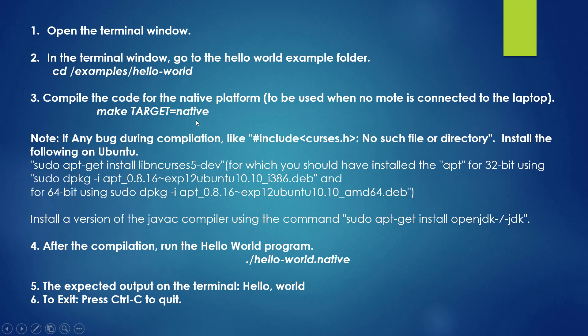Sometimes you may get an error — 99% of the time you will not get it if Contiki Cooja is properly configured. But sometimes, if some library files are missing, you may get the error: 'curses.h: No such file or directory'. To fix this error, use the command: `sudo apt-get install libncurses5-dev`. This is for 32-bit; if you are using the 32-bit version of Contiki Cooja, use this command.